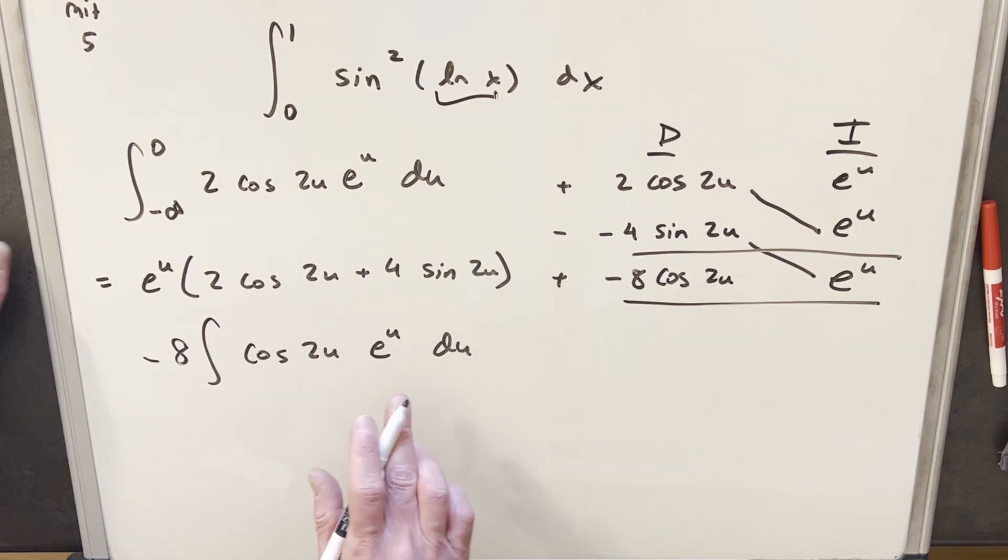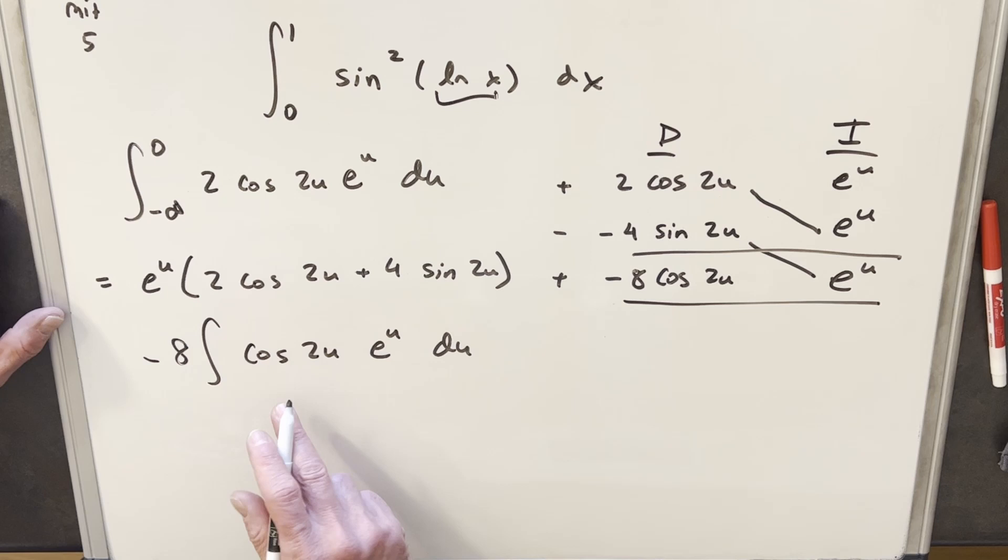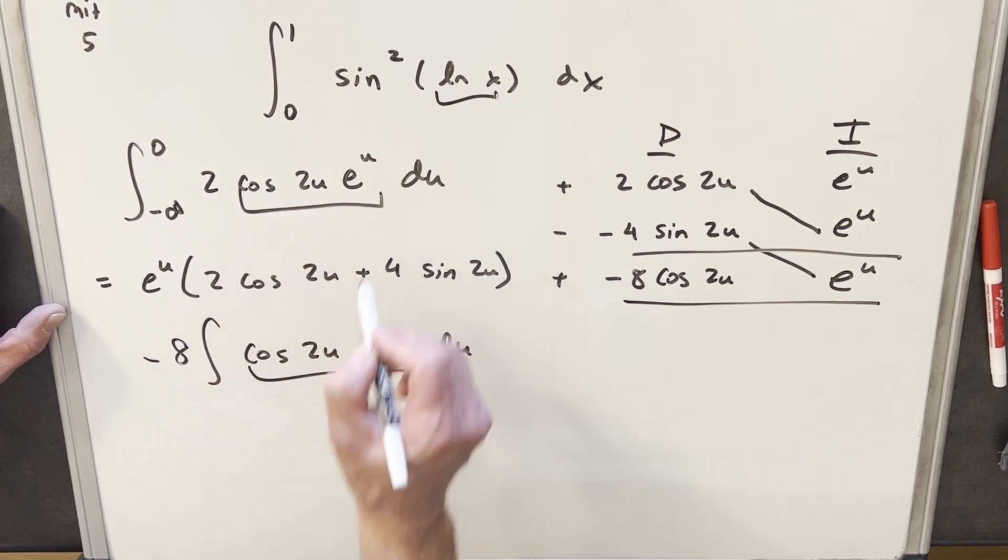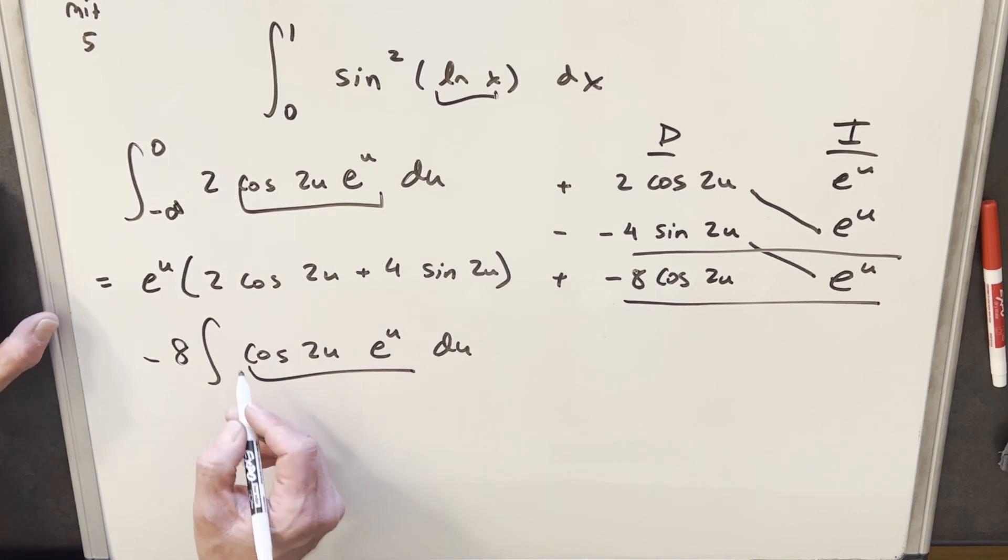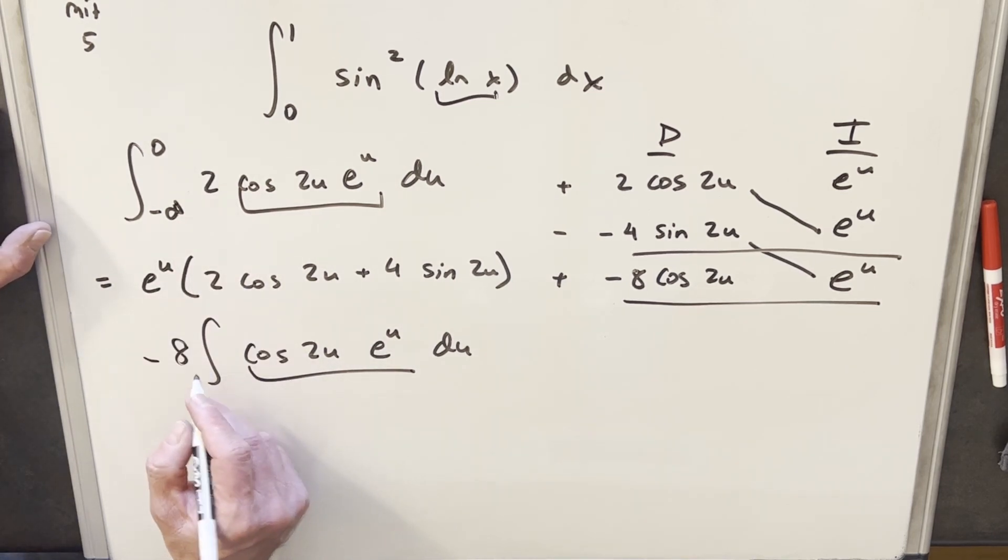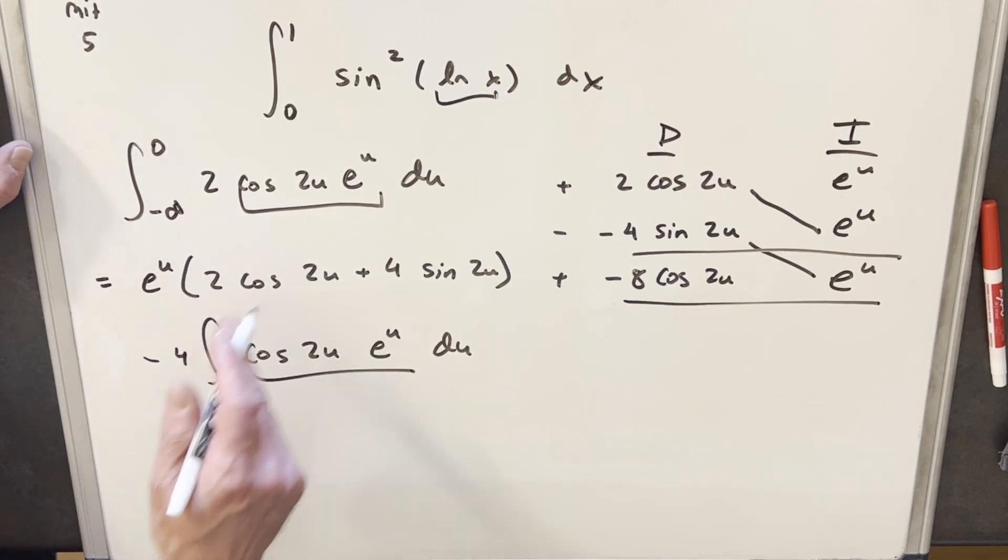And the thing I want to notice is this is our repeating integral case, because notice this is exactly what we have here. What I'm going to do to make it exact, let's get this 2 back in here. So what I'm going to do is I'm going to take this 8 and I'm going to write it as 2 times 4. We'll just put a 4 right here. So now it's exact.